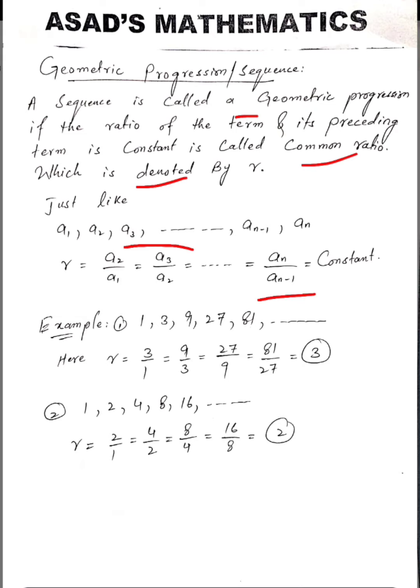If all the ratios are constant, then that sequence is called a geometric sequence or geometric progression.